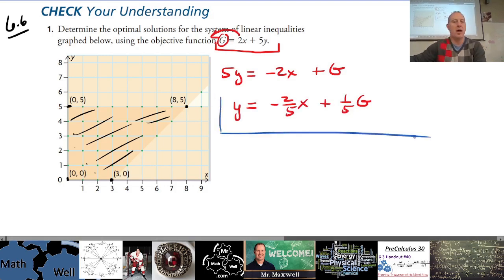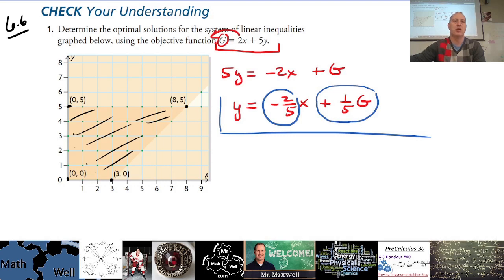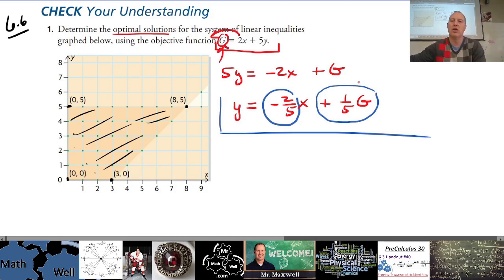Now what's important here is that this represents a line. Here's the slope, negative 2/5, and here is the intercept, 1/5G. If we are looking for the optimal solutions, I guess we're looking for them, what provides the maximum and minimum.